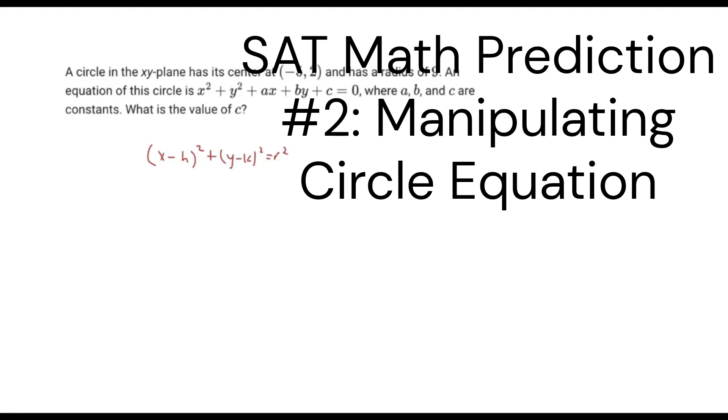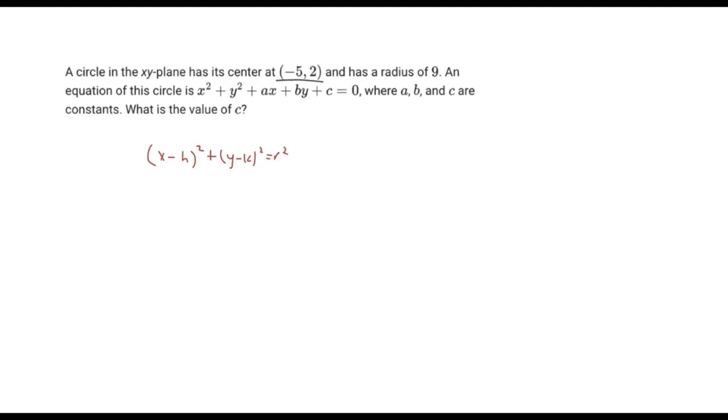All right, so the next problem says a circle in the XY plane has a center at coordinates of (-5, 2), and has a radius of 9. The equation of the circle is x² + y² + Ax + By + C = 0, where A, B, and C are constants. What is the value of C? All right, so the thing here is we've drawn out what we have, the standard form for a circle. And so what we have are these center coordinates, and we know the center coordinates correspond with H and K, respectively, in this equation. And we also know the radius, so we can just plug these numbers in.